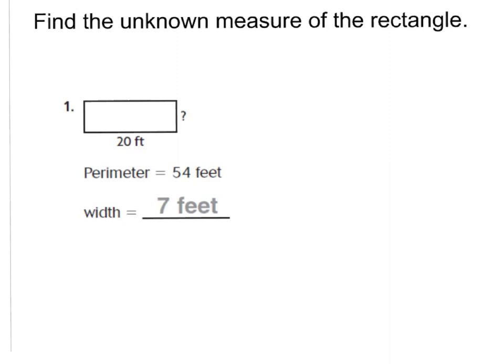Just like our essential question said, we're going to be finding the unknown measure of the rectangle. What we'll be doing, boys and girls, is we have to use some clues that are given to us. For example, here we have a couple clues. I know that my base, or the length, is 20 feet long, but I don't know the width of this rectangle. I do have a clue though - the entire perimeter will be 54 feet. Remember, perimeter means the distance around my rectangle.